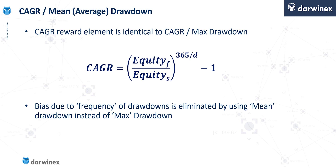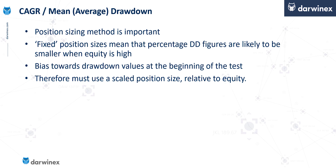A couple of important points about CAGR over mean drawdown: the position sizing method you use throughout the backtest is really important. You must not use fixed position sizes, because that means the percentage drawdown figures are likely to be much smaller when equity is high, introducing a bias towards drawdown values that happen at the beginning of the test when equity is lower. To remove this bias, you can simply use a scaled position size relative to the equity. For more information on that, watch the previous episodes I mentioned at the beginning of this video.